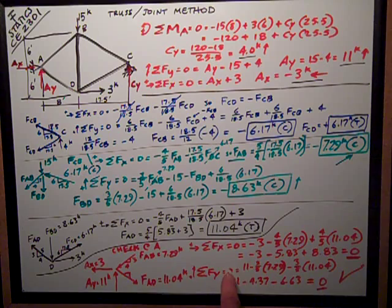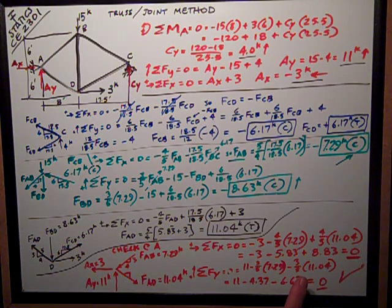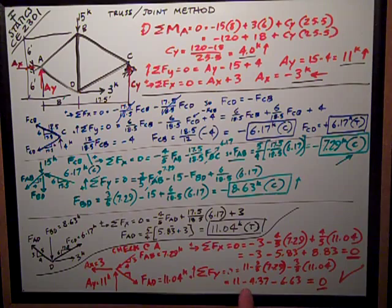Sum of forces in the Y direction, zero, I get 11, the reaction, minus 3 fifths of 7.29, the force in AB, minus 3 fifths of the force in 11.04 here, and it's going down, so it's minus, so that all checks out to be zero, too.